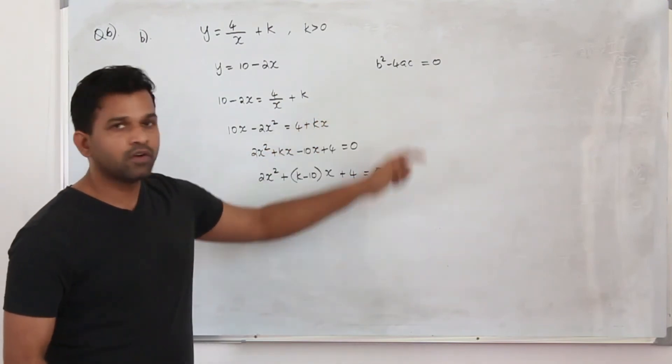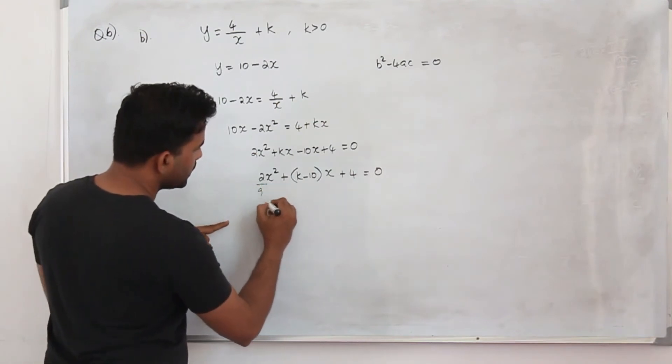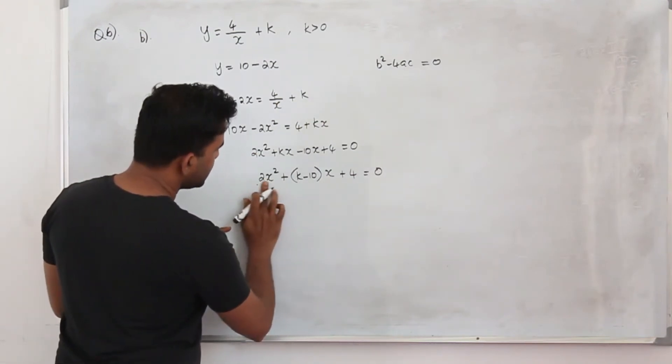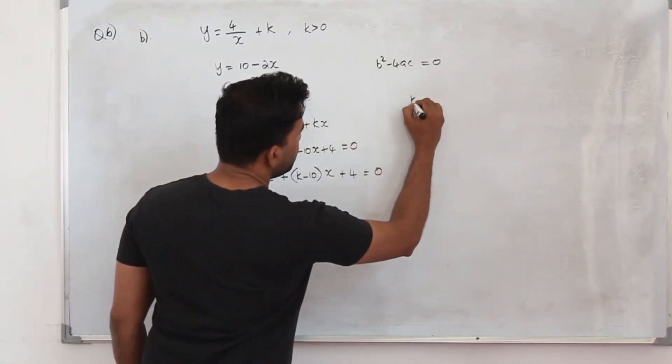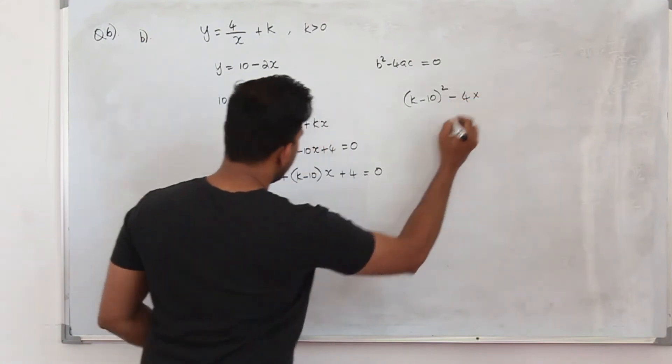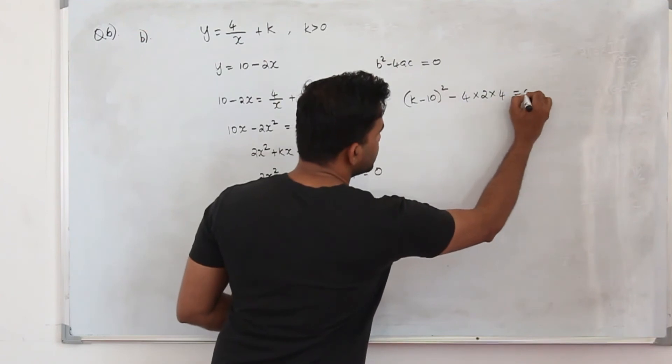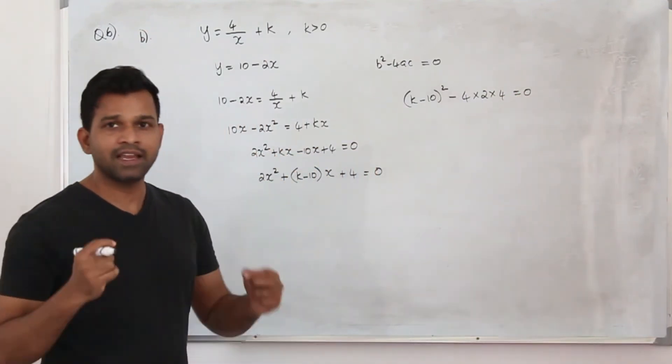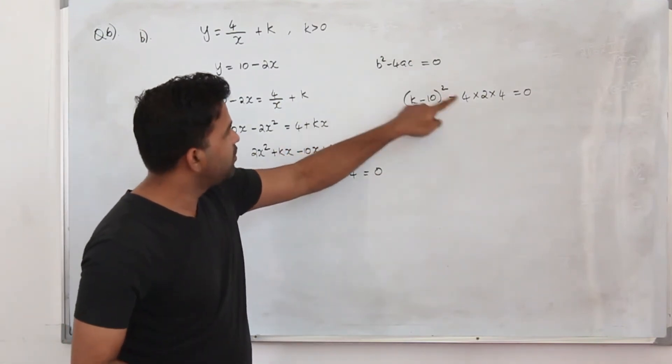Now take the values of a, b, c and substitute here. Your a is 2. And b is k minus 10. C is 4. Substitute here. B square minus 4ac equals 0. Because the line touches the graph at only one point. So our discriminant will be 0.